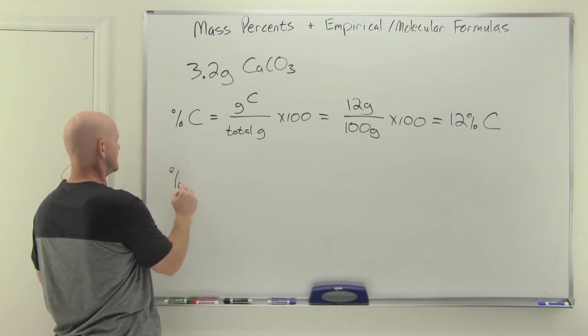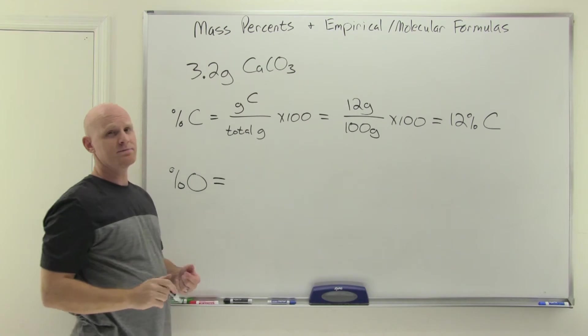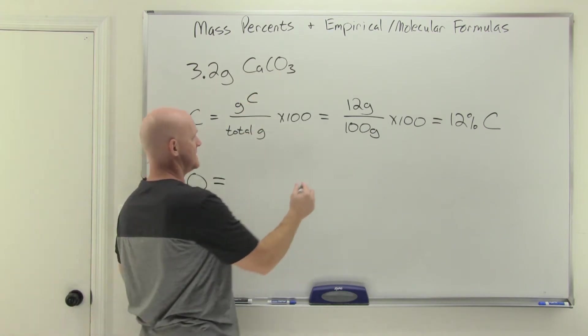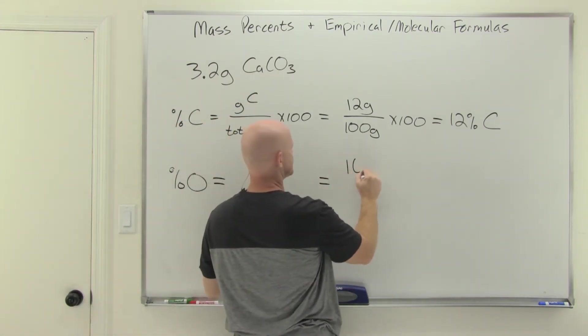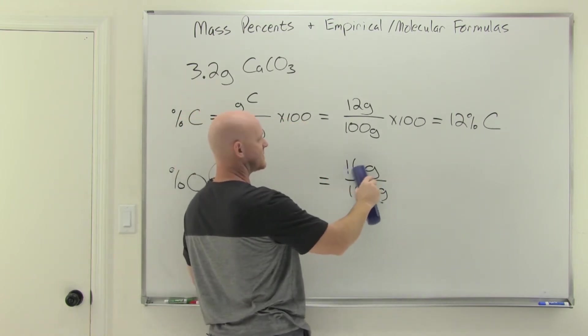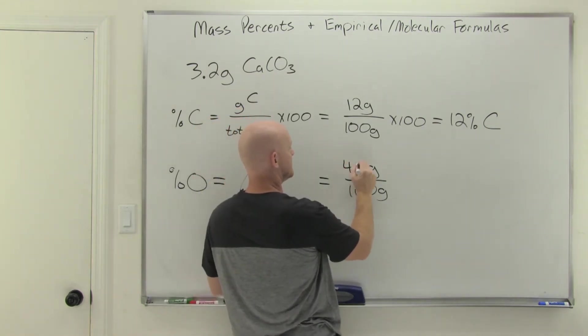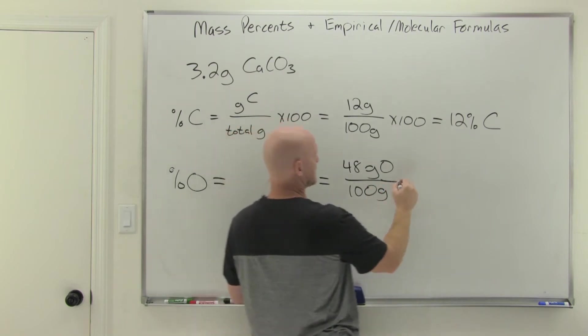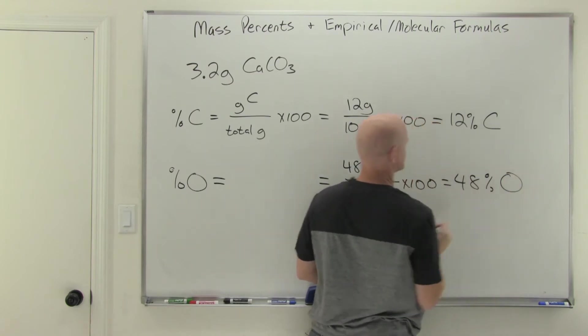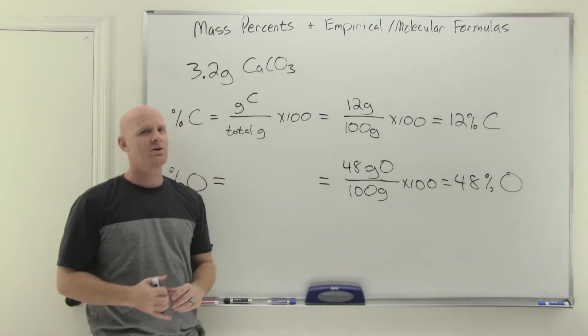We can do the same thing for percent oxygen. In this case, you just got to take into account that you've got three oxygen atoms in the formula. So instead of just taking oxygen's molar mass of 16 grams, it's really three times 16, which is 48 grams of oxygen per 100 gram sample size, times 100. The math is nice, and that's 48% oxygen in the sample. That would be true for any size sample of pure calcium carbonate.